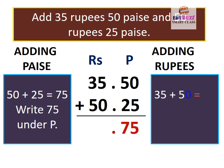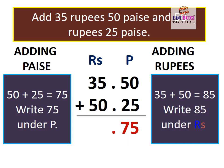Adding rupees: 35 plus 50 is equal to 85. Write 85 under rupees.